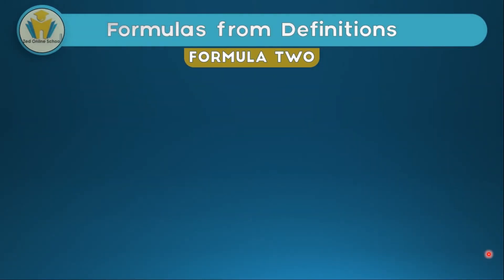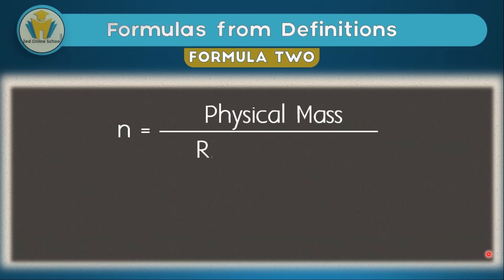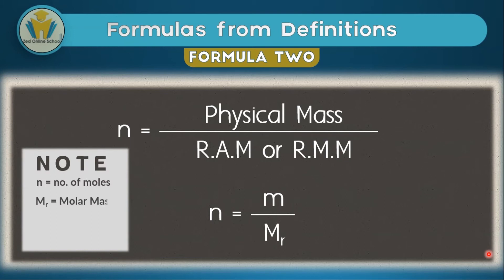The second formula comes from the second definition. We said a mole is an amount of mass equivalent to the relative atomic mass or the relative molecular mass. Therefore, one mole equals the physical mass of a substance divided by its relative atomic mass or its relative molecular mass. N equals M over MR is the more natural way of referring to this formula. Note that N is for the number of moles, and MR is for molar mass — the mass of that particular molecule or atom that is equal to one mole. If the number of moles being calculated are for an atom, the molar mass is just the same as the relative atomic mass.